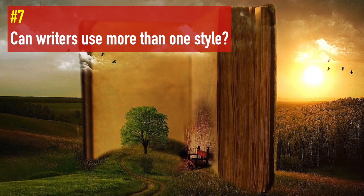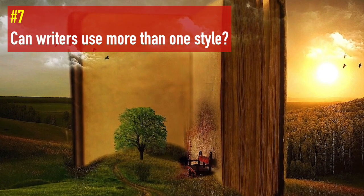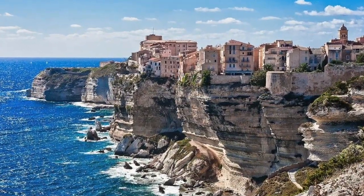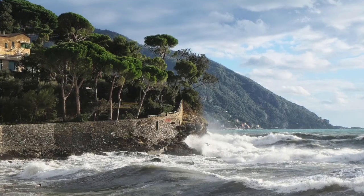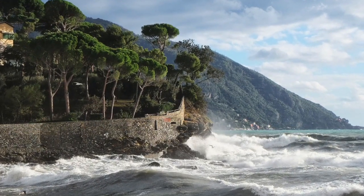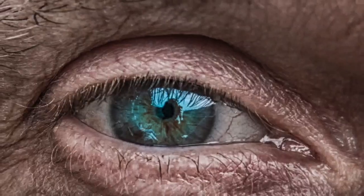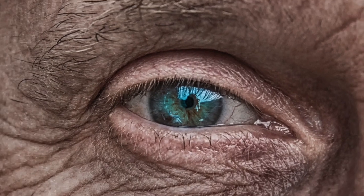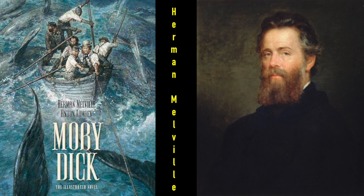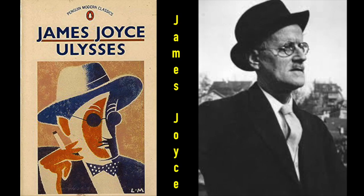Number seven: can writers use more than one style? Some authors use more than one style within a novel. This approach allows the author flexibility in choosing which style is appropriate at different points in the work, depending on the situation and on the character or characters being portrayed. Novelists who have mixed styles include the American writer Herman Melville in Moby Dick and the Irish writer James Joyce in Ulysses.